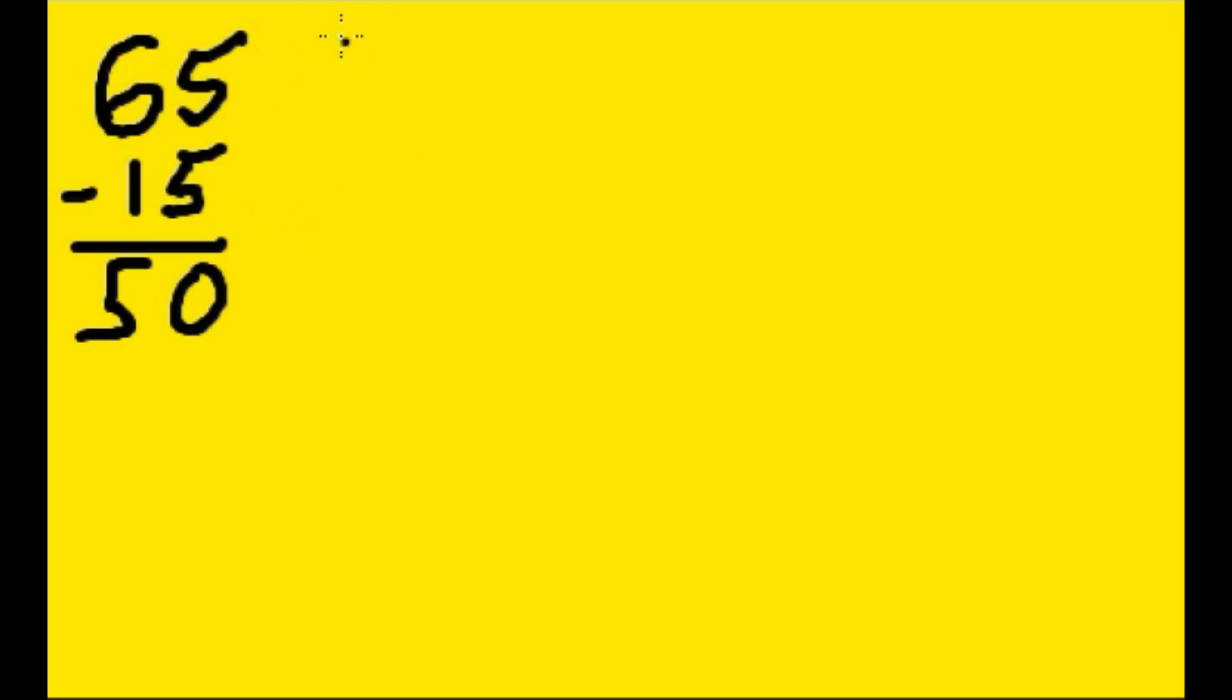So let me write out 65 first. That's going to be a 64 and a 1 in binary, so that's 0100 0001. That's my 65. Put a little arrow there.